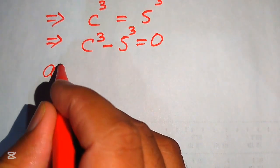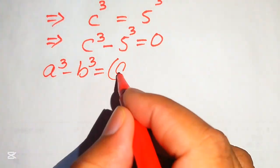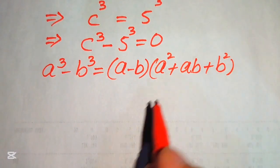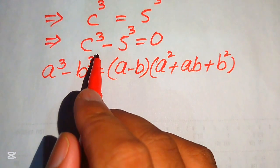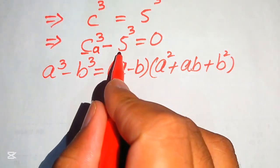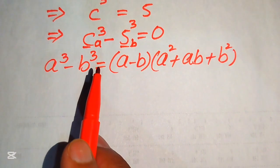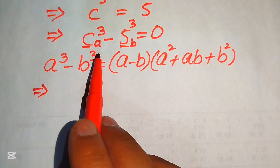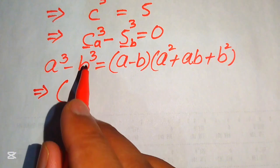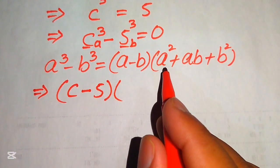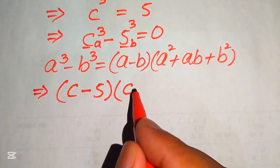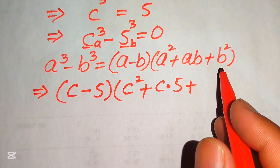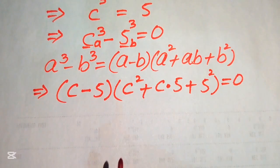Now we use the cubic formula: a cubed minus b cubed equals to (a minus b) times (a squared plus ab plus b squared). In the above equation, the base of the first term is our a and the base of the second term is our b. So here our a is c and b is 5. Putting these values into the formula, it becomes (c minus 5) times (c squared plus c times 5 plus 5 squared) equals to 0.